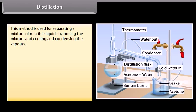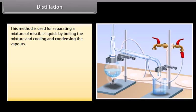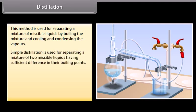Distillation. This method is used for separating a mixture of miscible liquids by boiling the mixture and cooling and condensing the vapors. Simple distillation is used for separating a mixture of two miscible liquids having sufficient difference in their boiling points.